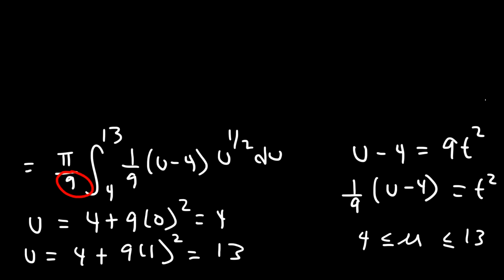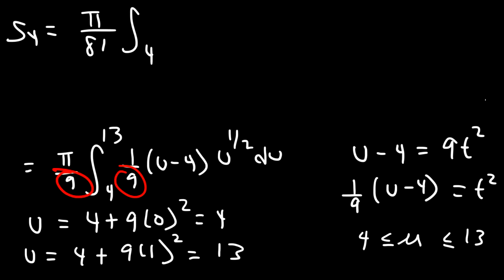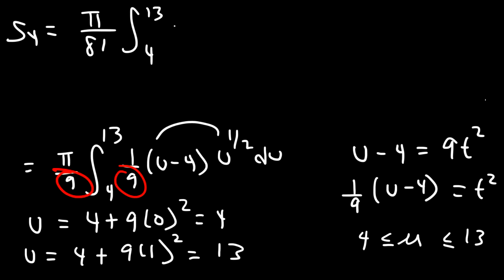Now I'm going to multiply 9 times 9. So this is going to be π/81, integral from 4 to 13, and I'm going to distribute u to the 1/2 to (u minus 4): u to the 1/2 times u is u to the 3/2, and u to the 1/2 times negative 4 is negative 4u to the 1/2.